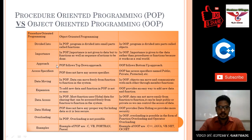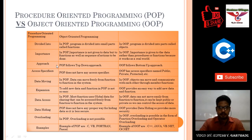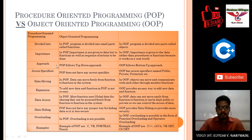Data hiding means hiding data for security purposes — for example, in banking applications, data hiding is important. Procedure oriented programming does not have any proper way to handle data hiding, so it is less secure. Object oriented programming provides the concept of data hiding for more security using abstraction, which is one property of OOP.